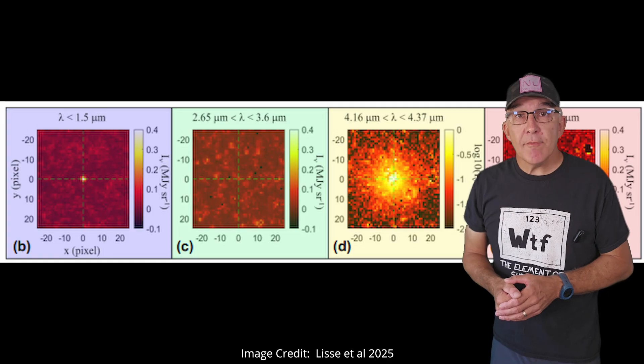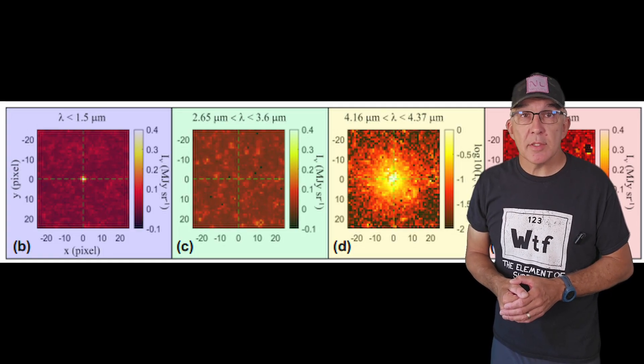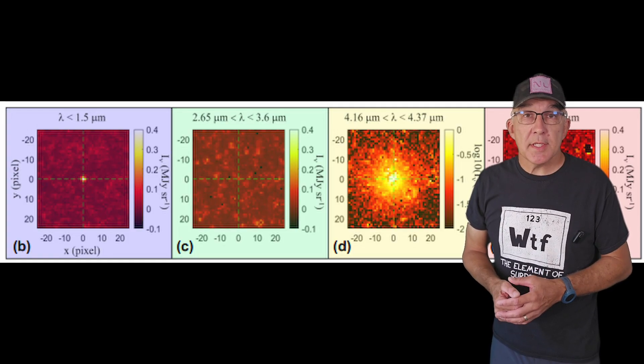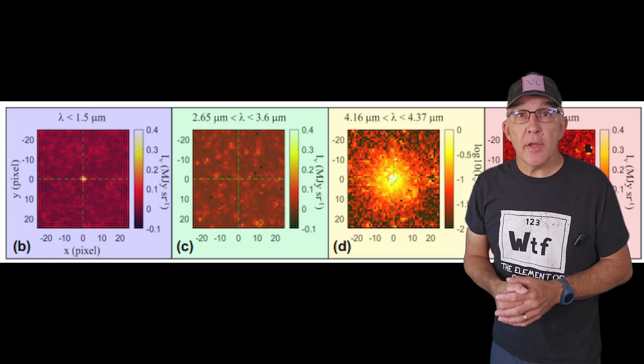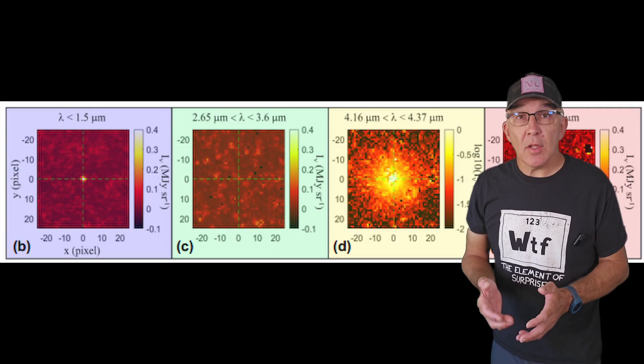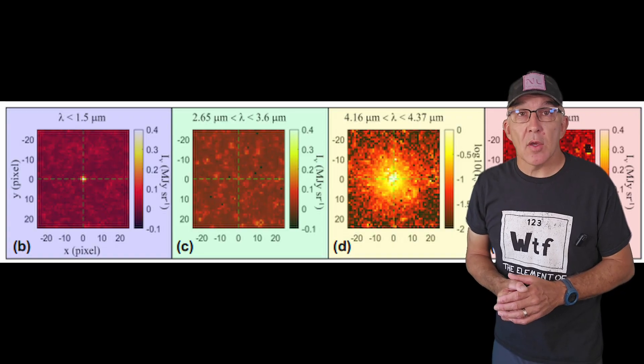The SPHEREX team found significant carbon dioxide gas emission from the nucleus of the comet, along with evidence for significant water ice in the nucleus. This is very typical for short period comets in the solar system and is solid evidence for 3I Atlas being a comet.